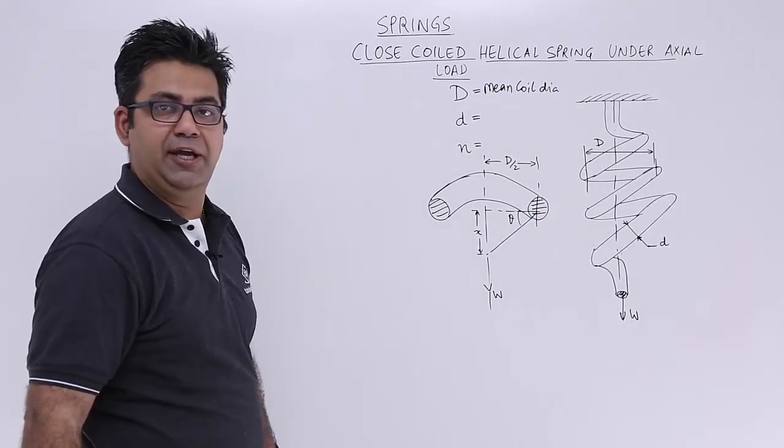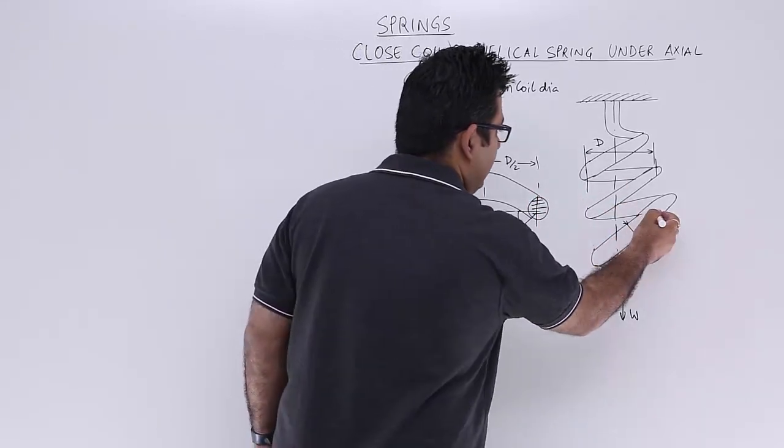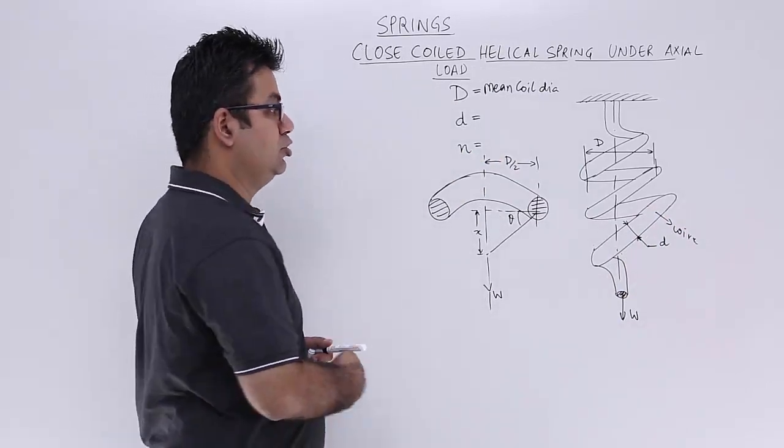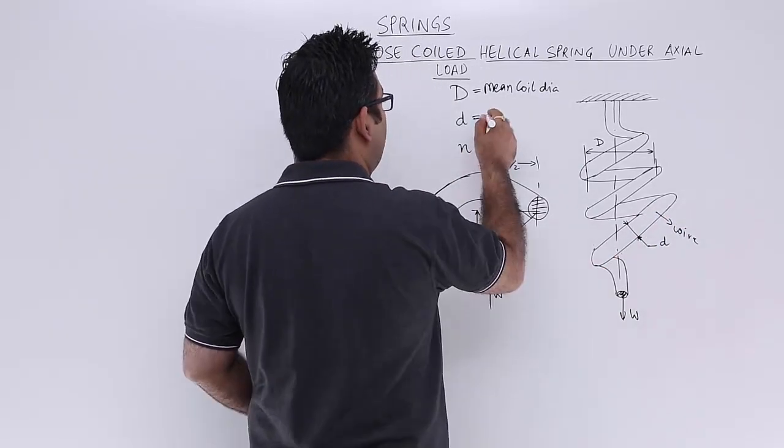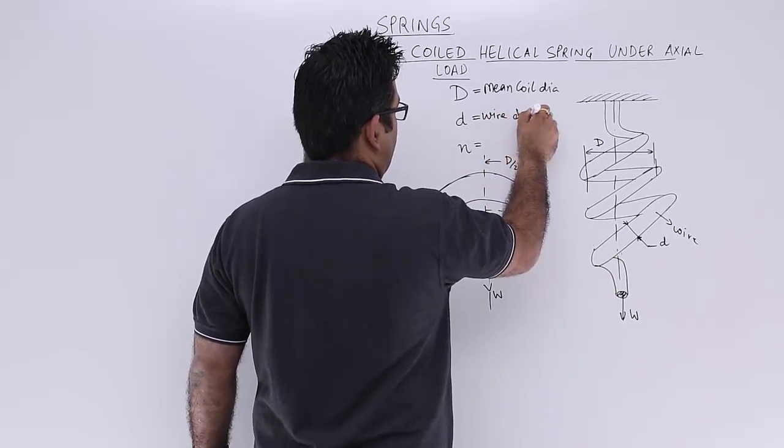Then you have d. So this coil is wound up by a wire. This is the wire which is creating this coil. So d is the diameter of the wire, so this is wire diameter.